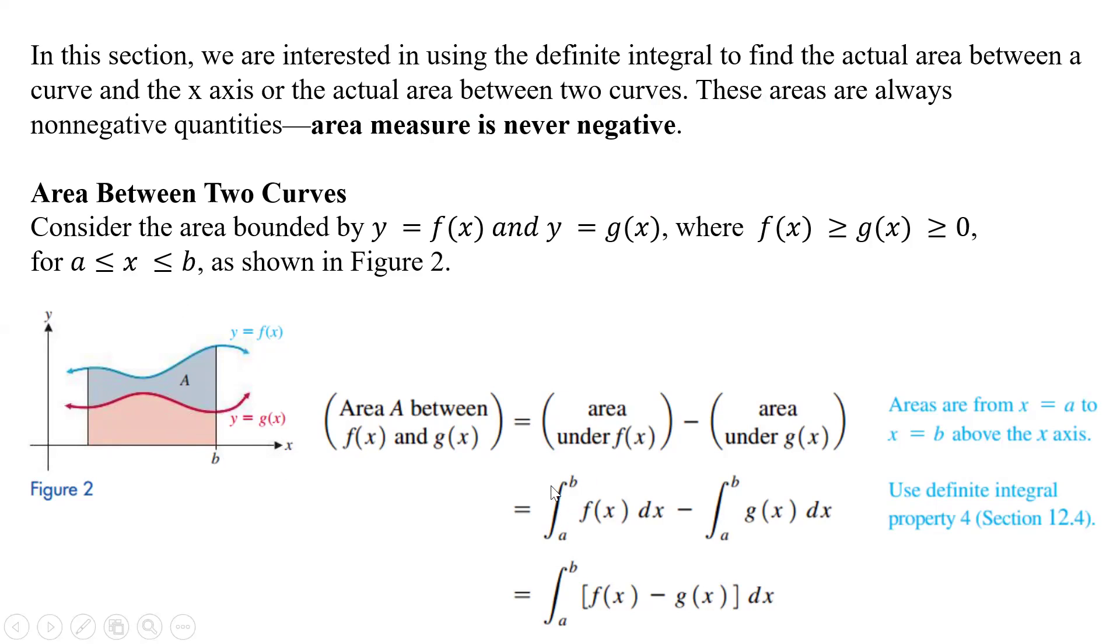The way we're going to do that is integrate from a to b of f(x) dx minus the integral from a to b of g(x) dx. Basically, we're finding the area under this curve minus the area under this curve. If we want to write it into one integral we can do this, or if we want to keep it as two separate integrals, that's how we're going to do that.